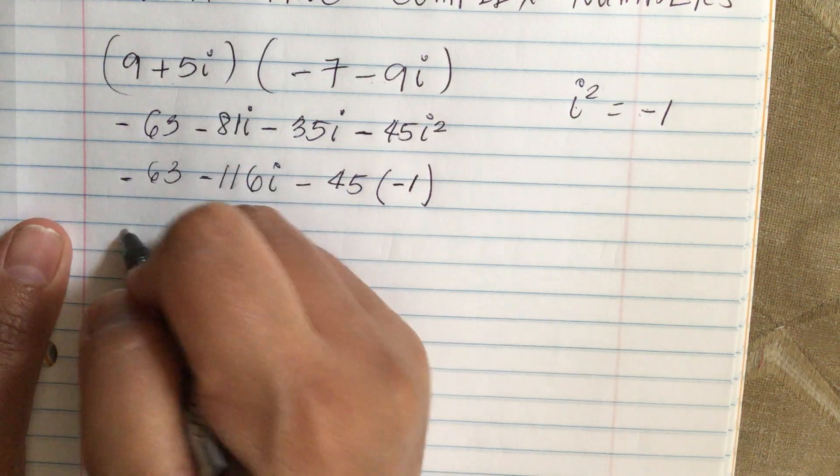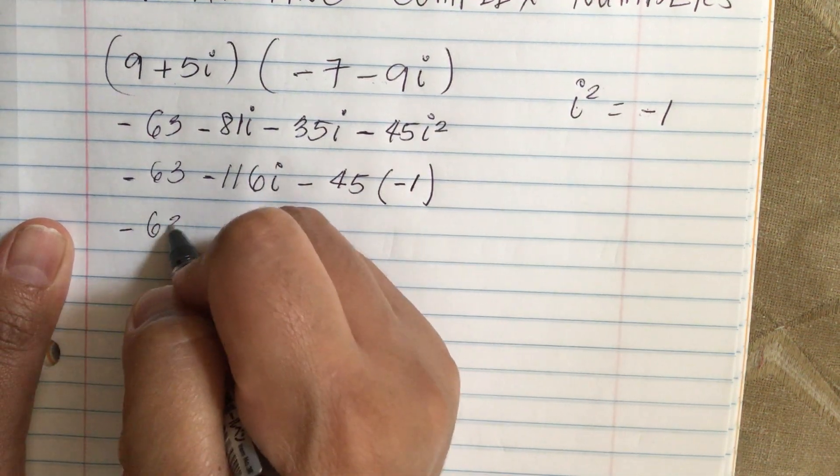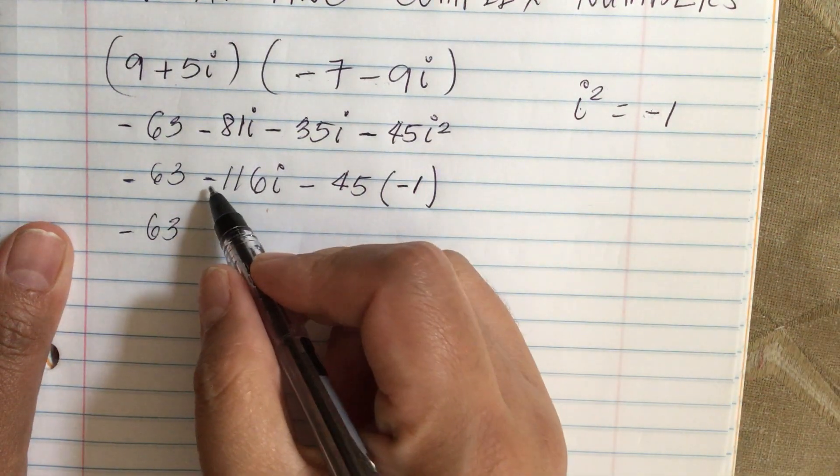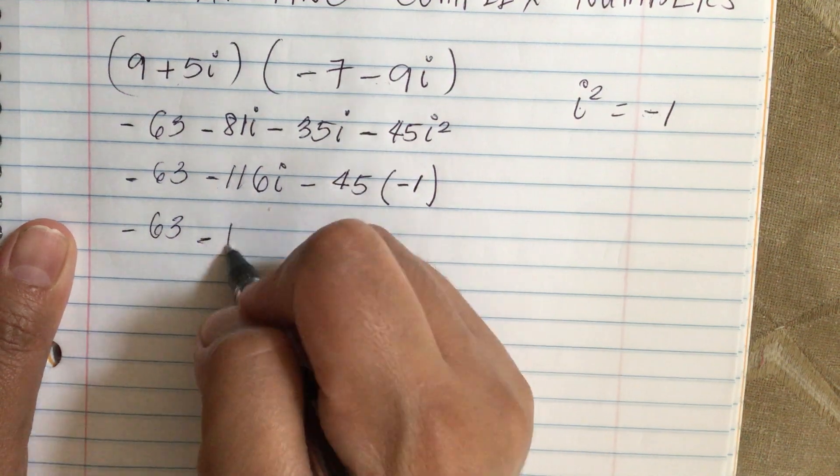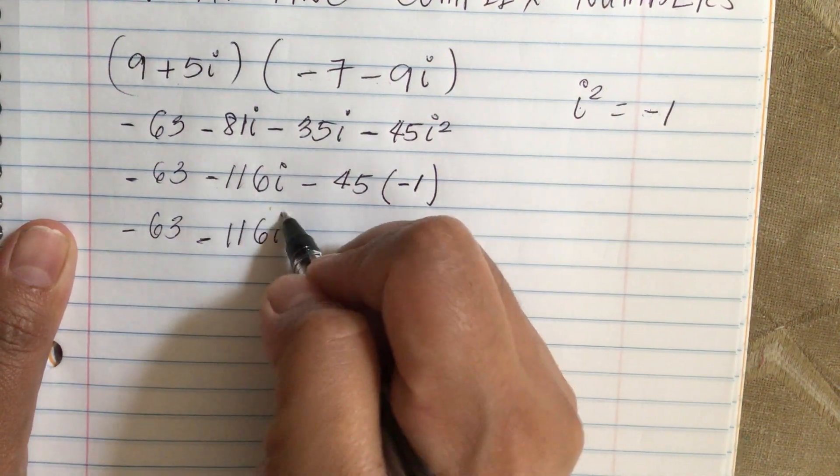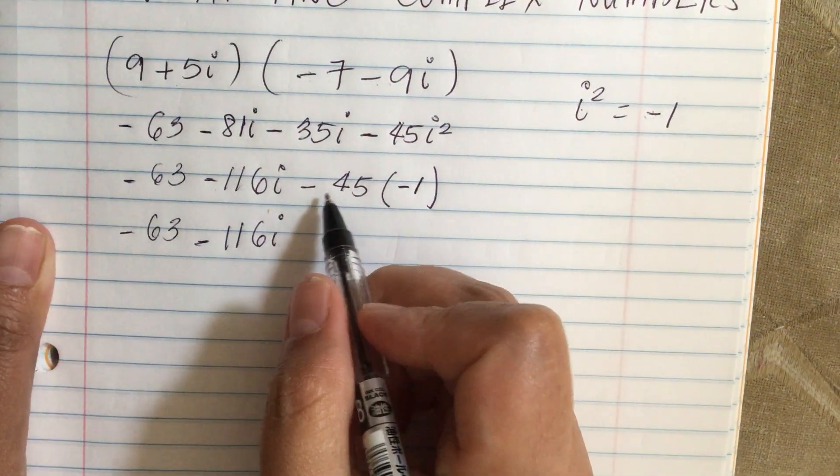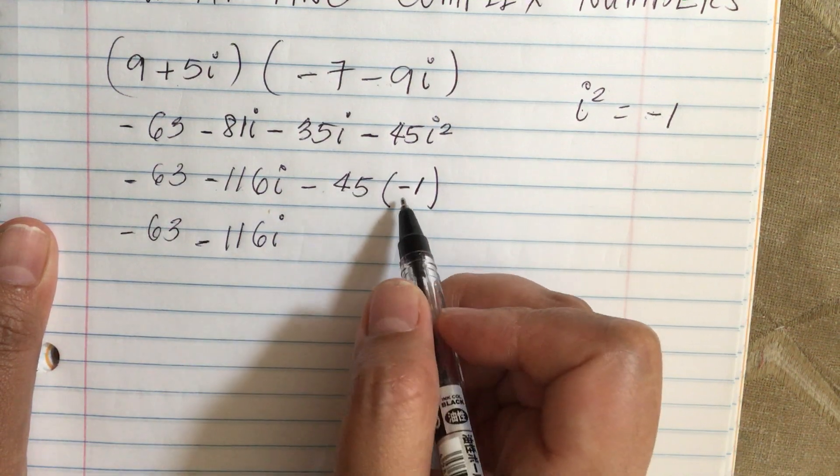We have minus 63 and then minus 116i, and then we have minus 45 times minus 1.